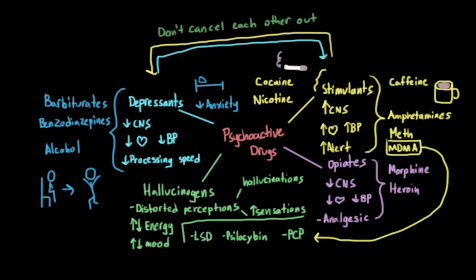What about cannabis? Where does marijuana go? It can cause perceptual distortion, so it could go under hallucinogens, but it can also decrease central nervous system function and cause relaxation much like a depressant. And of course, this is just one way to classify psychoactive drugs — we could also sort them by legal status or how likely they are to be abused.